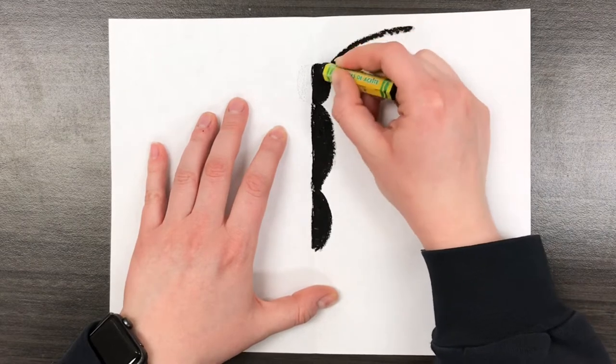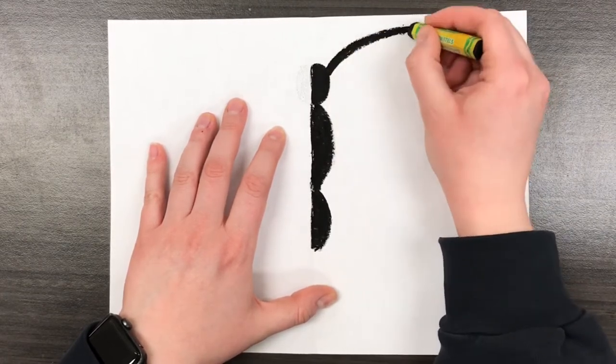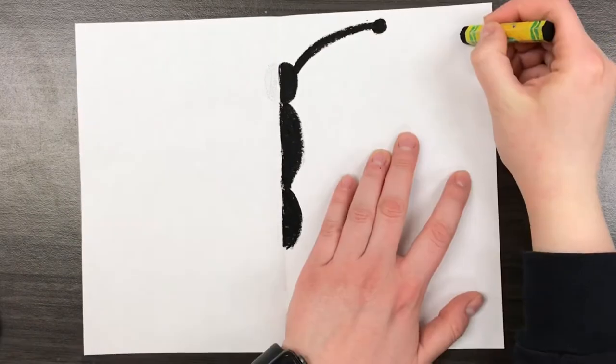Next, I'm going to make the antenna, just drawing a curved line. And then I'm going to make a little dot for the end of the antenna.